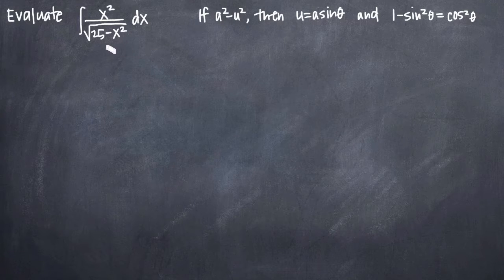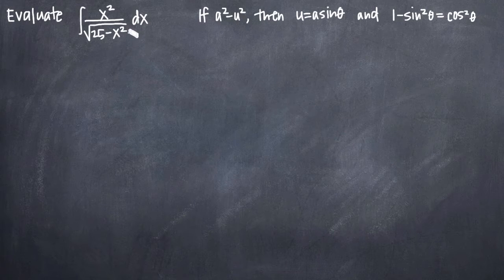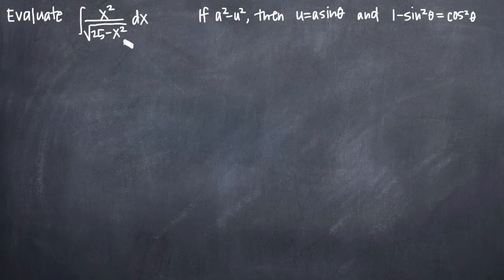So in our problem, we have in the denominator here under the square root sign, 25, which of course is 5 squared, and that's a constant. And we have x squared here, which is a term that involves our variable, and x squared is the square of x. So what we need to do is identify that we have the form a squared minus u squared.